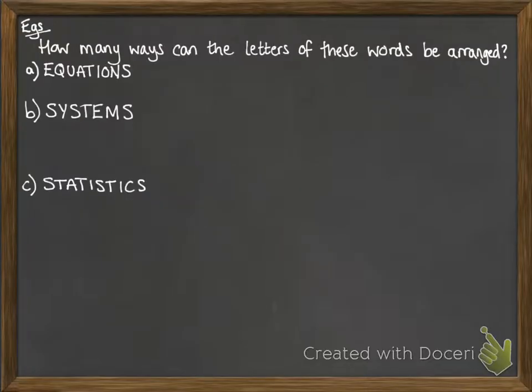So let's have a look at a typical sort of question involving those things. So how many ways could the letters of these words be arranged? So first of all, EQUATIONS. All the letters are unique, we don't have any repeats, so that's a nice straightforward one. We've got nine letters, nine factorial ways to arrange them, gives us an answer of 362,880. You would just use a calculator there.